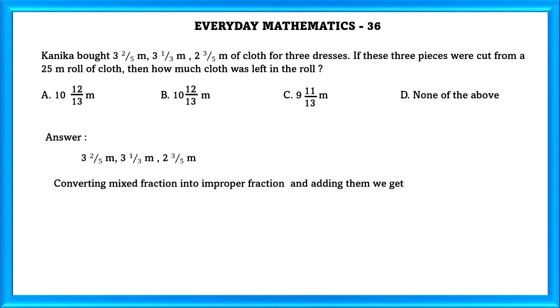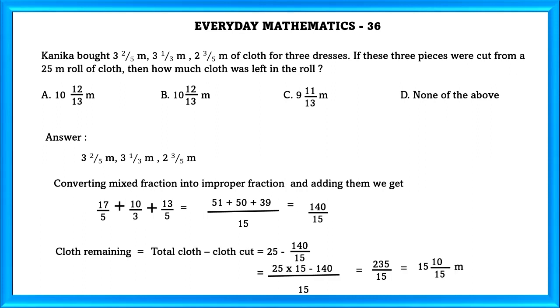Converting mixed fractions into improper fractions and adding them we get 140/15. Cloth remaining equals total cloth minus cloth cut from the piece which equals 25 minus 140/15 which equals 235/15. Converting into mixed fraction we get 15 10/15 which is not in the options, so the answer is none of the above.